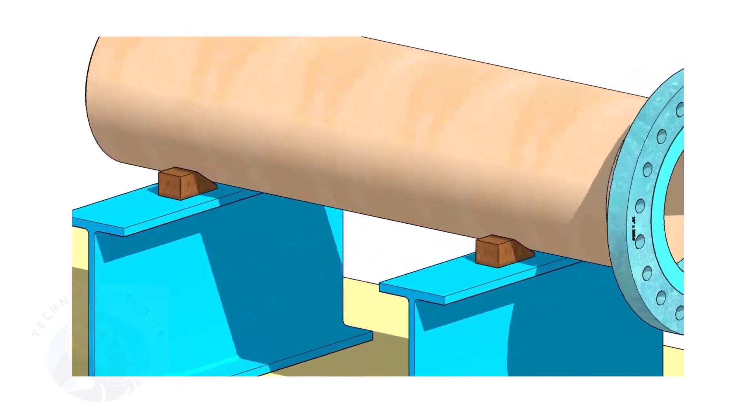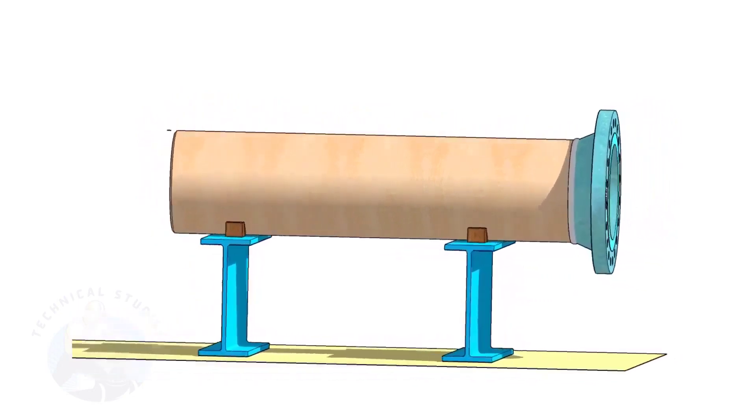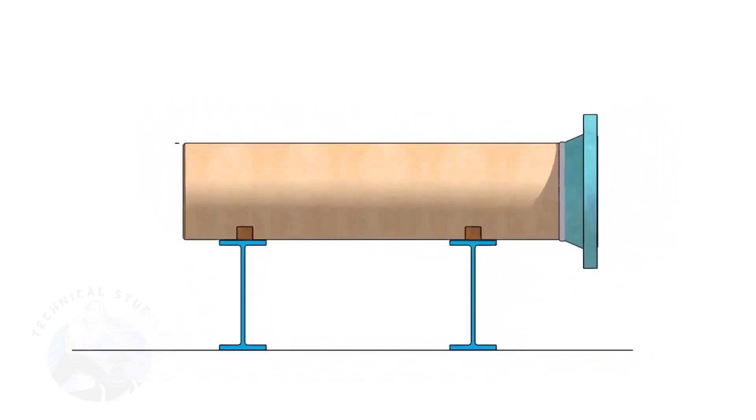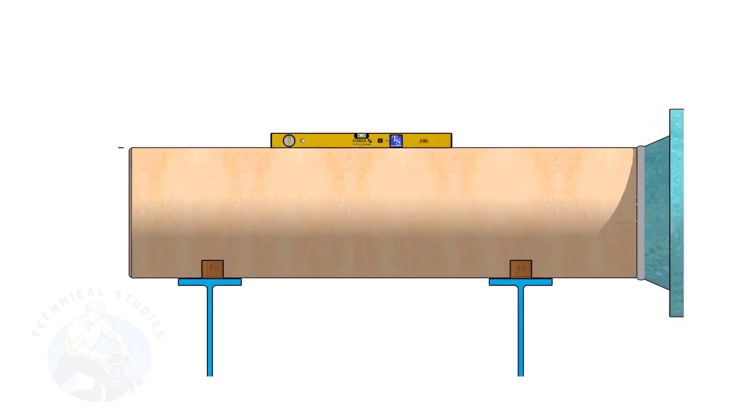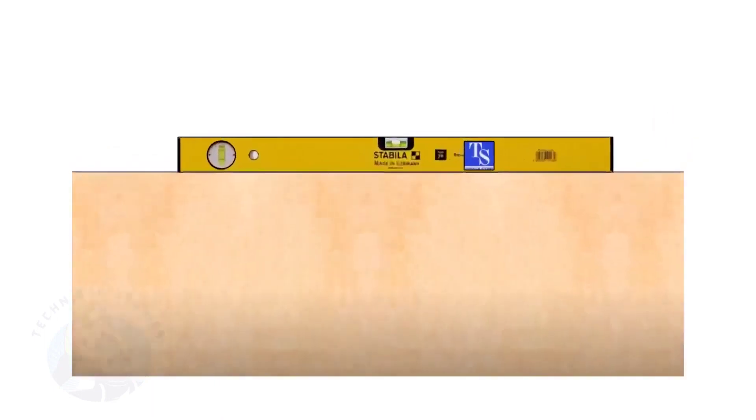Provide proper supports on both sides of the pipe to prevent rotation. Correct the level of the pipe. Check the plumbness of the flange a second time.